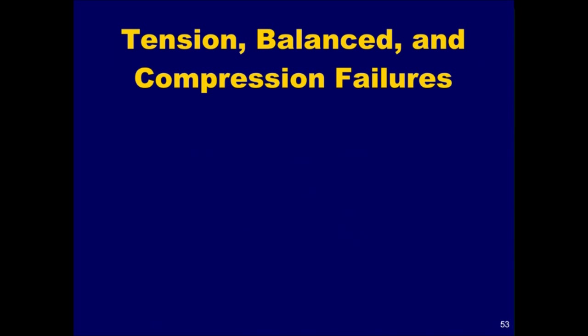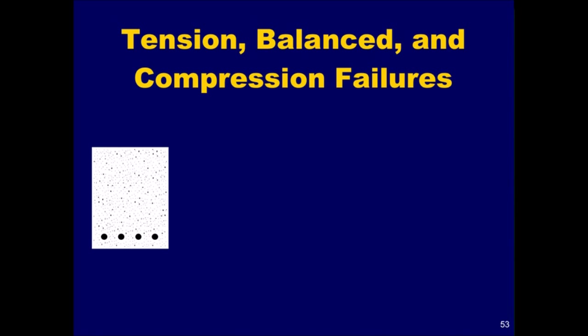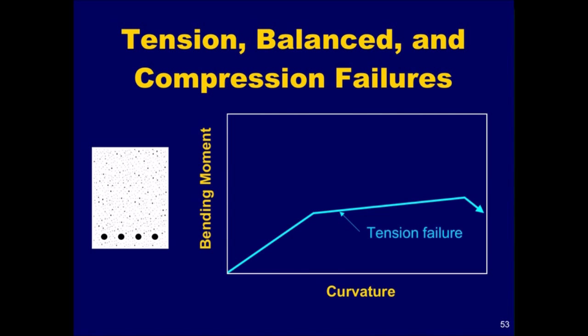The equation for the nominal flexural strength was based on the assumption that the reinforcing steel yields before the concrete crushes. We will see that it is advantageous for the steel to yield prior to the concrete crushing. We will also discuss what is meant by a tension, a balance, and a compression type of failure for a flexural section. Consider a reinforced concrete beam with only tension reinforcement. The amount of tension reinforcement is such that, at failure, the reinforcing steel will yield in tension before the concrete crushes in compression. It is evident from the moment-curvature diagram that the beam has a long plastic region — it exhibits a ductile response up to failure. This is commonly referred to as a tension failure.